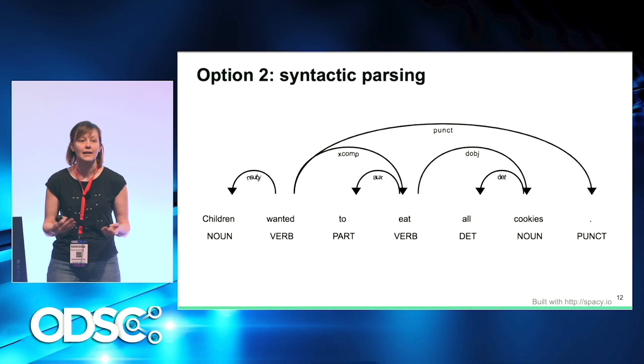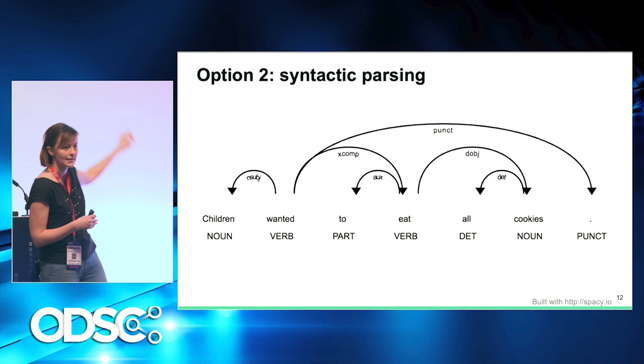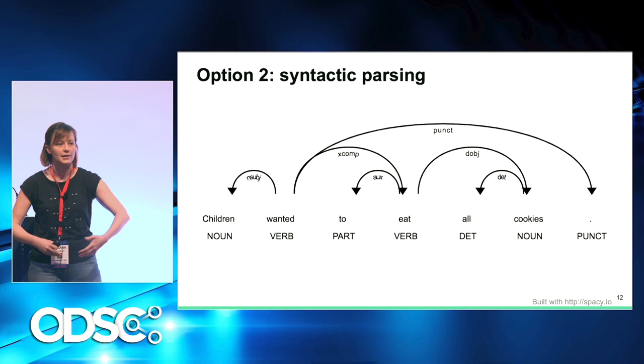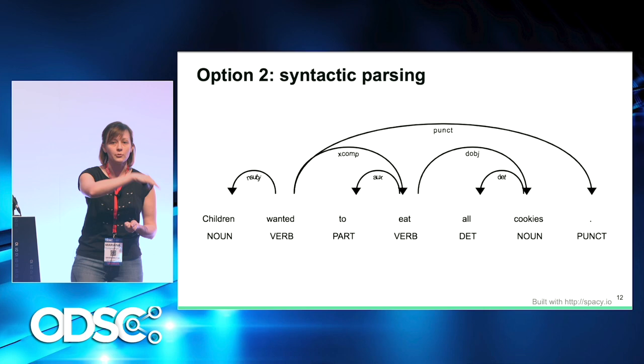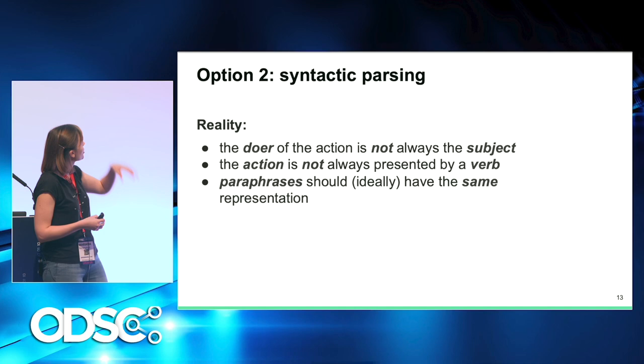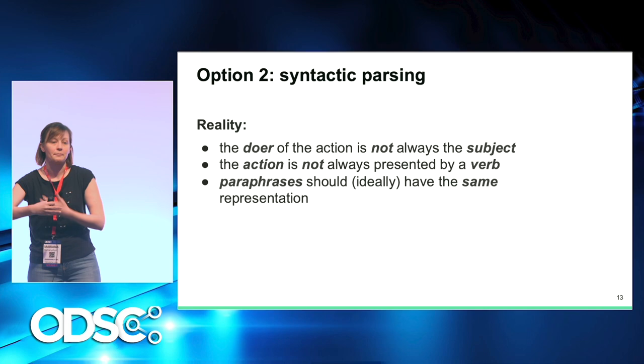A syntactic parse tree can give us information on who is the subject and what is the object of a certain action. But it's not always the case because this representation is formally linguistic. If you look at the word 'eat,' we know as people that children in this case are eating cookies. But the word 'eat' does not have a direct dependency to the word 'children' — we have to trace this dependency and go to 'want' and then find the subject of wanting.